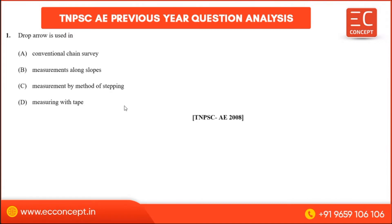First question: Drop arrows are used for — options include conventional chain survey, measurement along slopes, and measurement by method of stepping. The answer for this question is measurement by method of stepping.